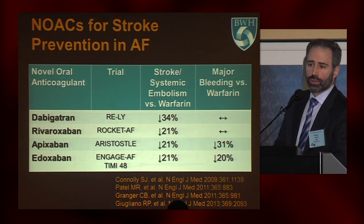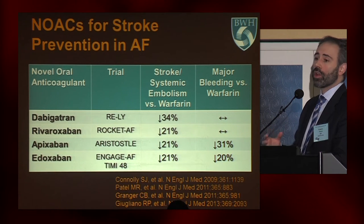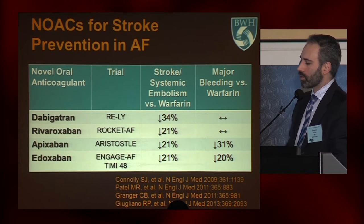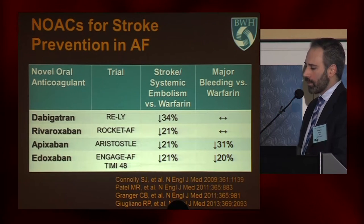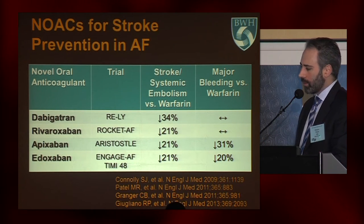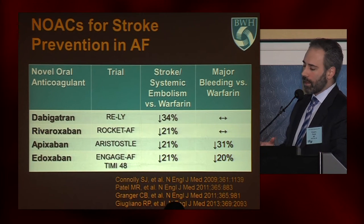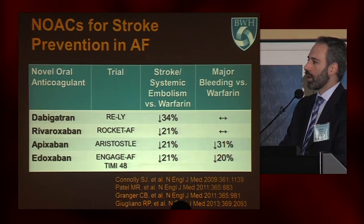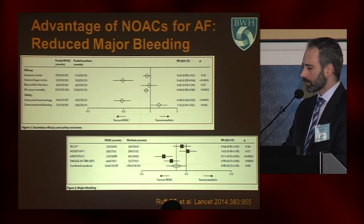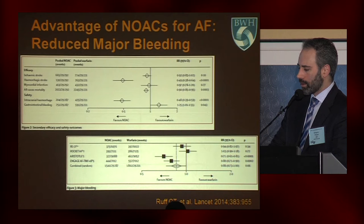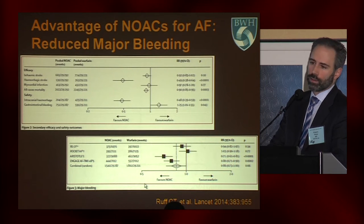When we look at these NOACs for stroke prevention in atrial fibrillation, we see something that nobody thought could be true — that there would be a class of agents actually more effective than warfarin for preventing stroke or systemic embolism. In all of the major randomized controlled trials of these NOACs, we see a reduction in stroke over what's achieved with warfarin, and in most trials it's at least as safe, if not safer, especially for prevention of intracranial hemorrhage. In meta-analysis we can see substantial reductions in intracranial hemorrhage and overall reductions in major bleeding associated with the NOACs.